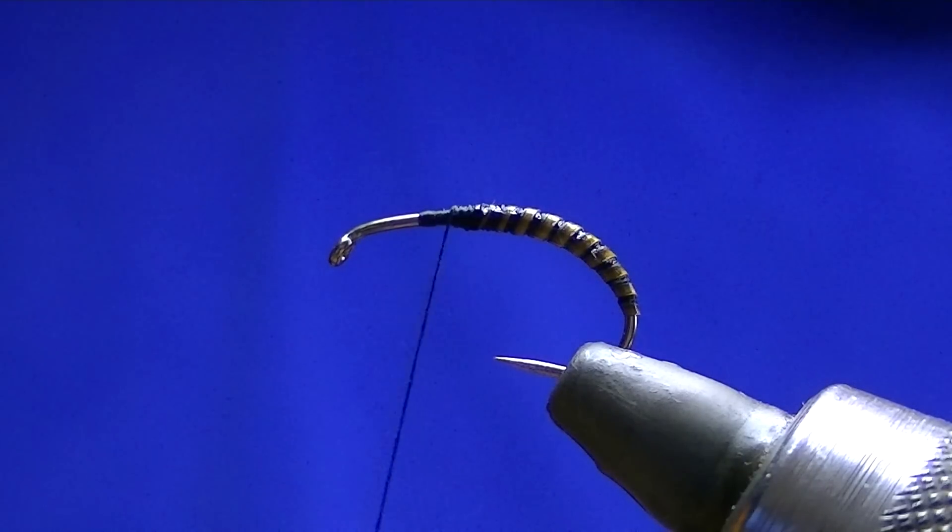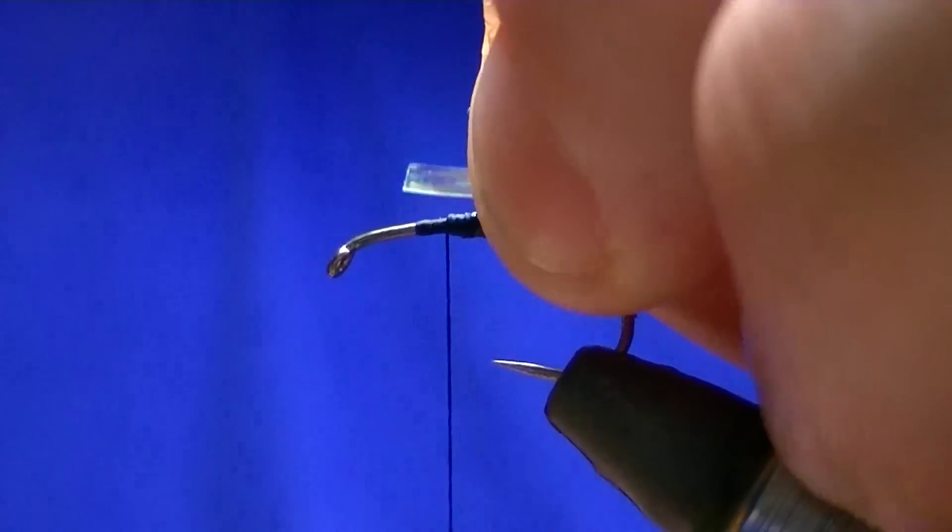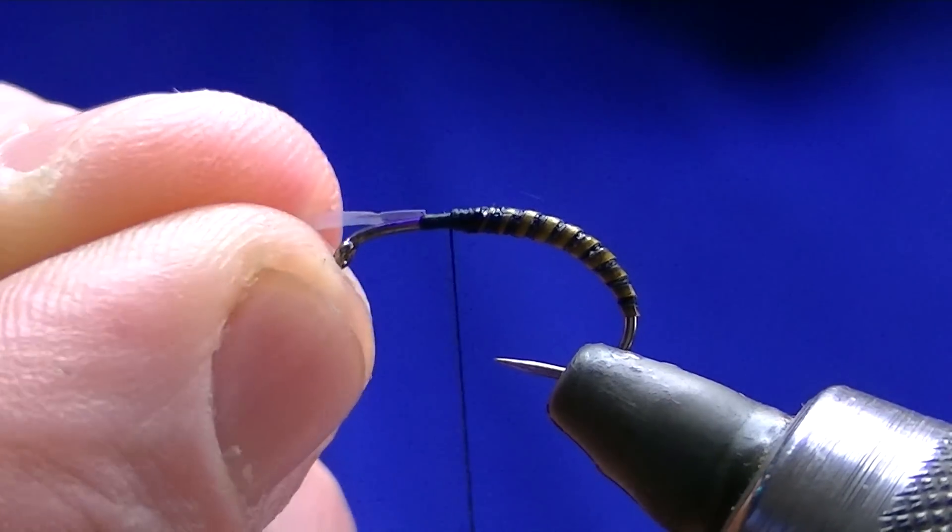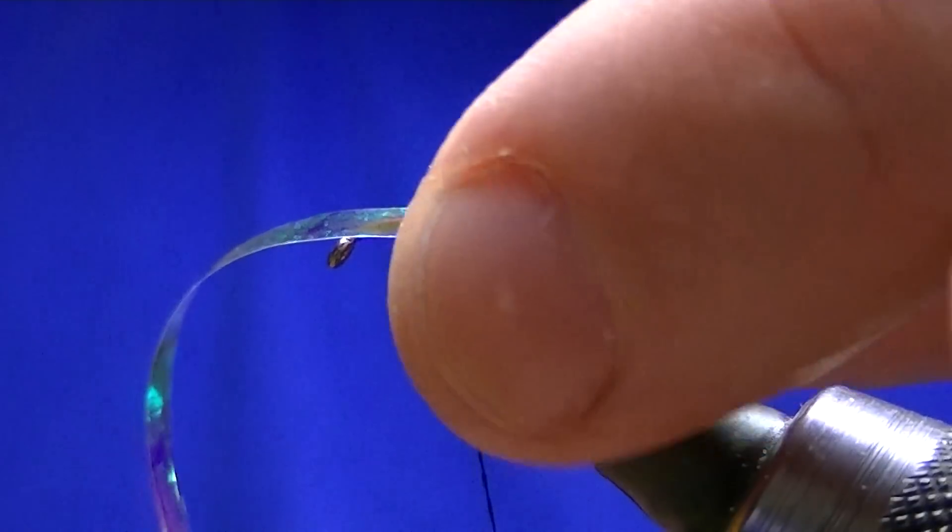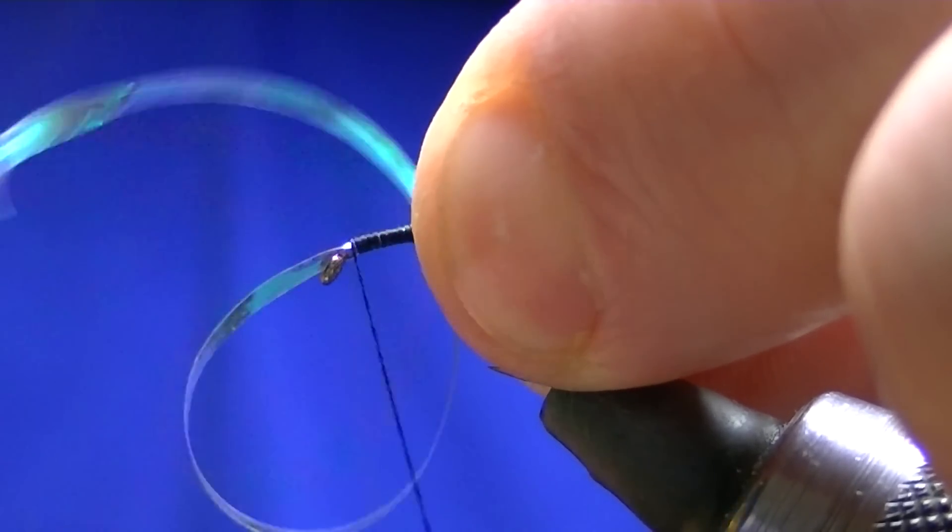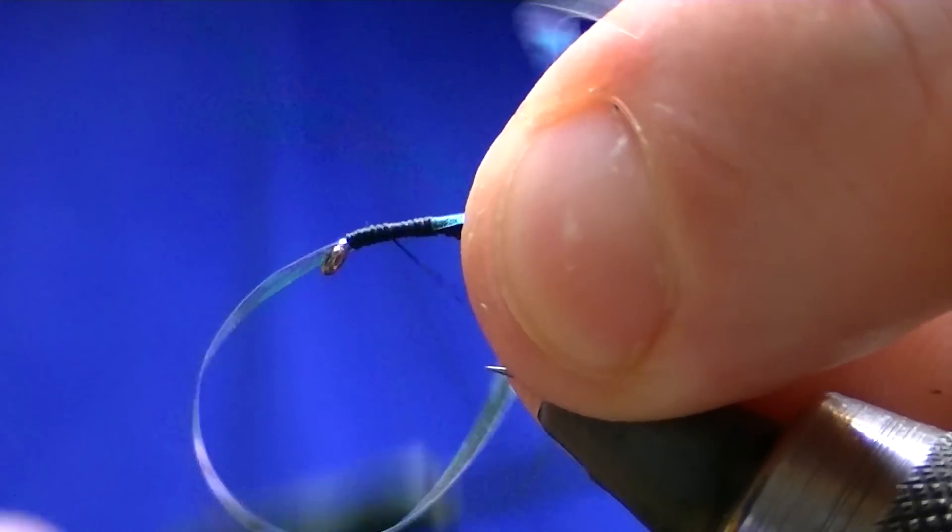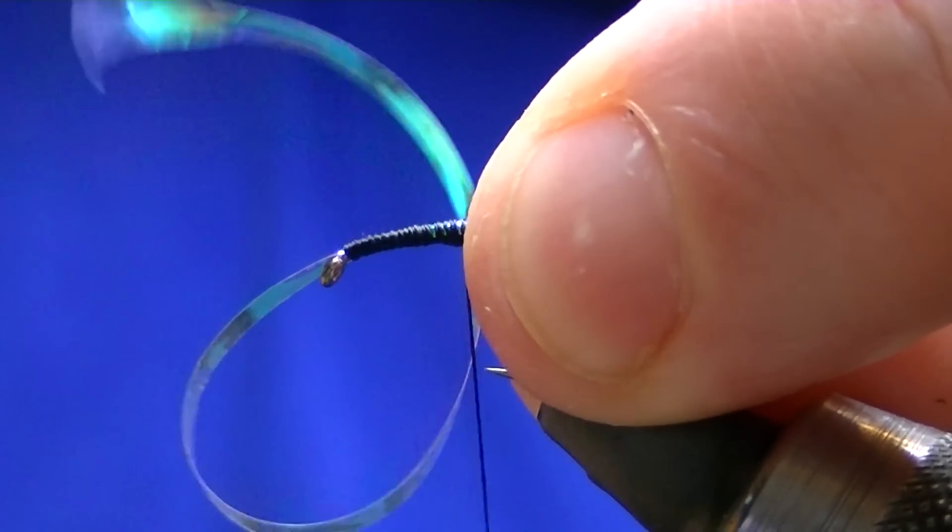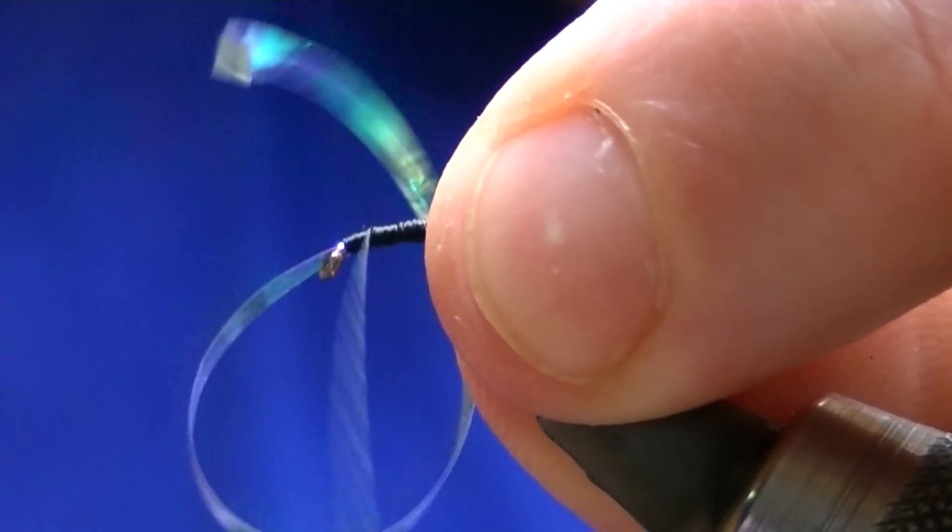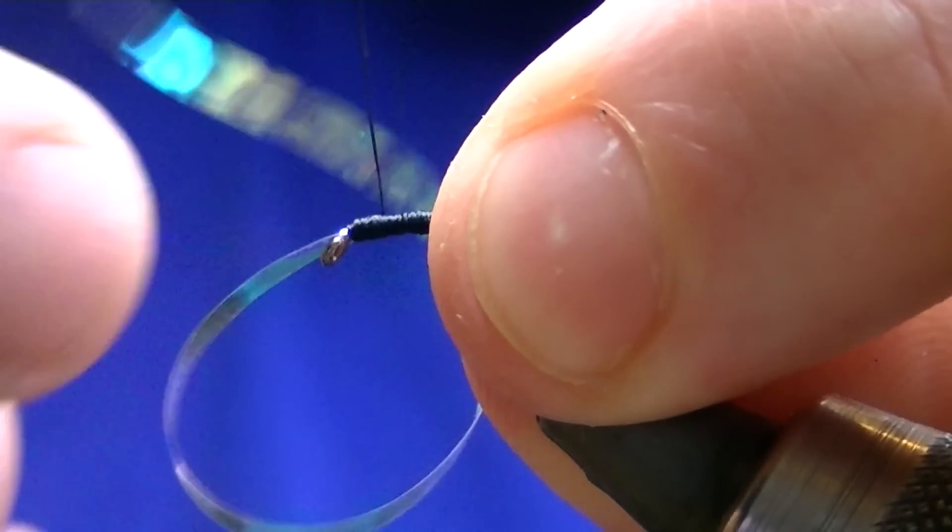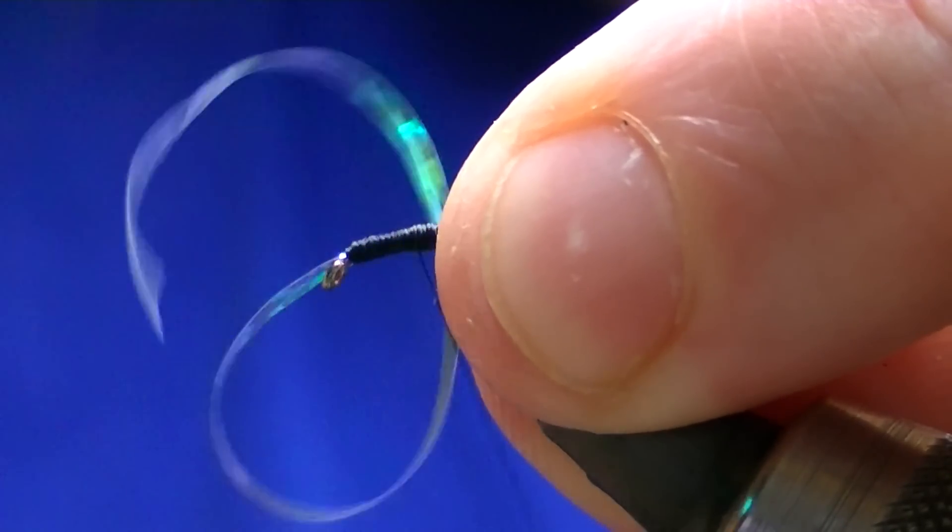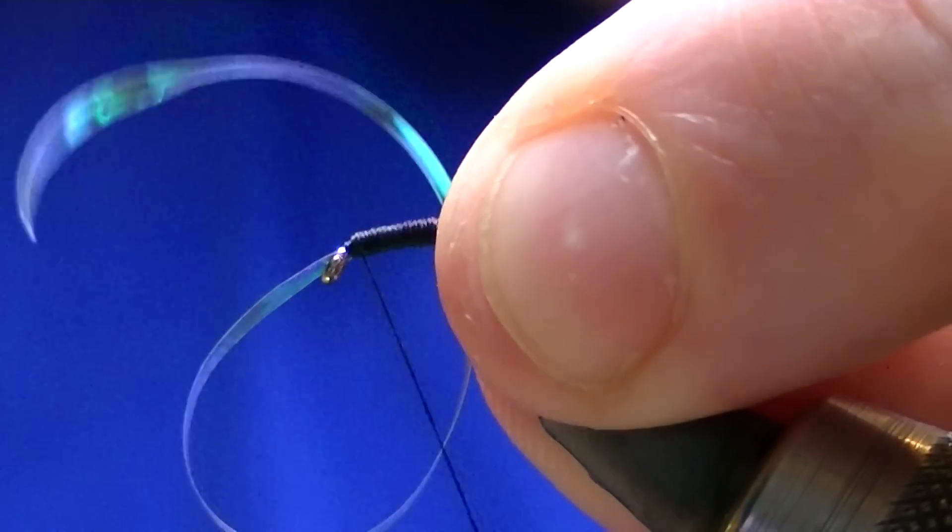I'm going to use some mirage, large mirage just for the thorax cover. What I'm going to do is catch it in this way and just go forward until you get to the eye and just work your way back. Then forward again, pull that out of the way. Then back again, and forward again.